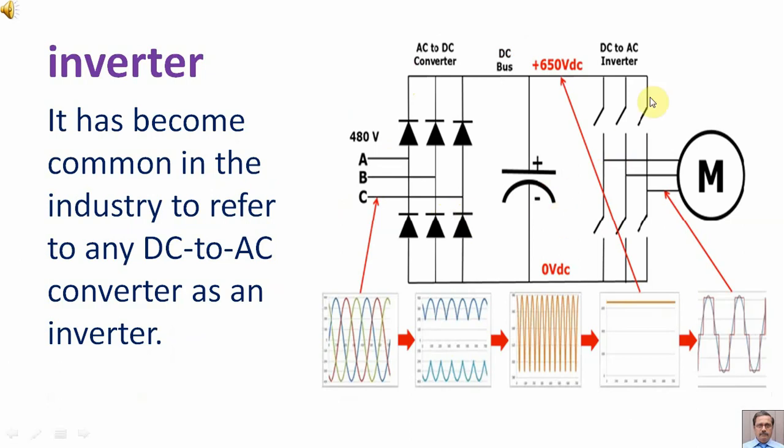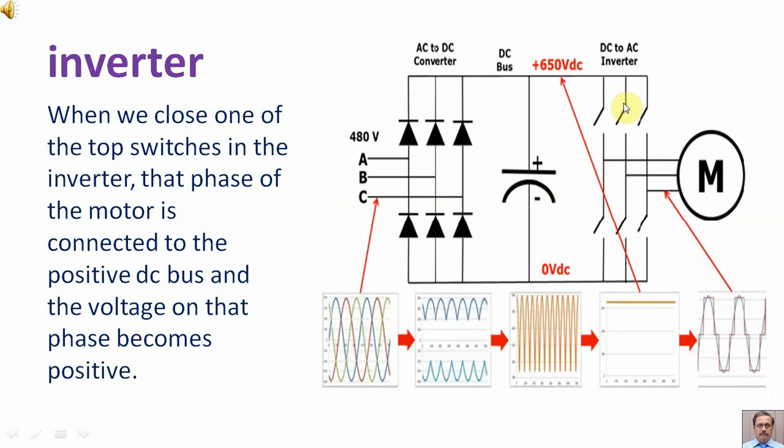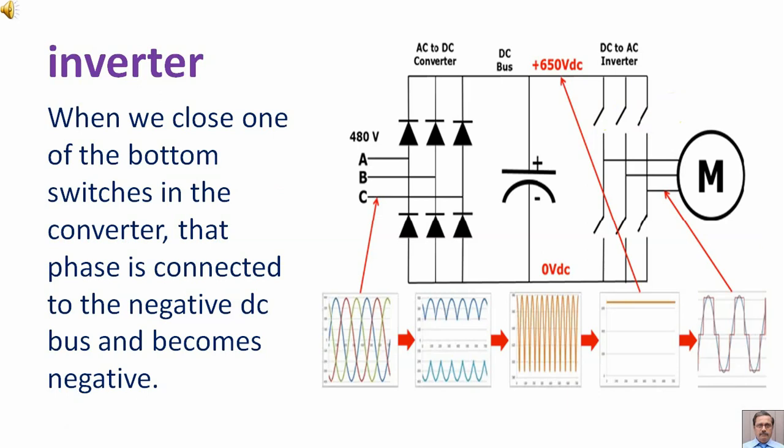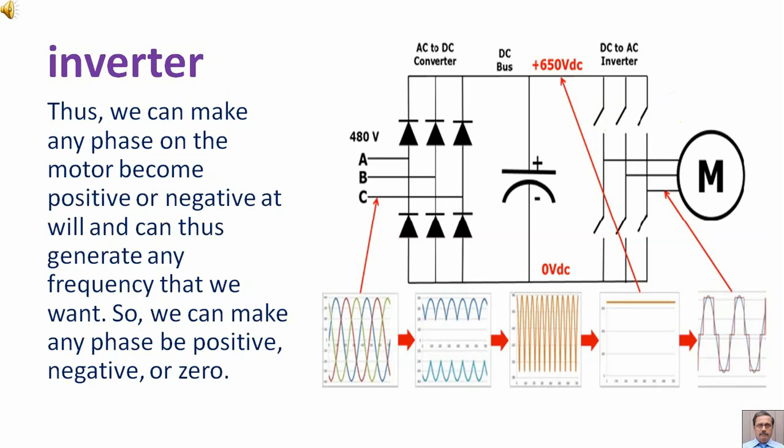Inverter. It has become common in the industry to refer to any DC to AC converter as an inverter. When we close one of the top switches in the inverter, that phase of the motor is connected to the positive DC bus and the voltage on that phase becomes positive. When we close one of the bottom switches in the converter, that phase is connected to the negative DC bus and becomes negative.